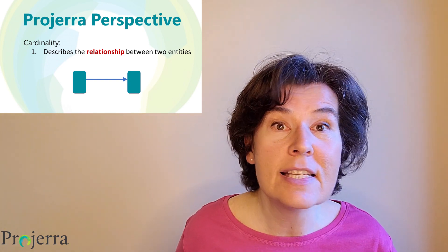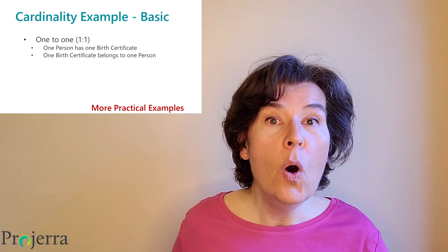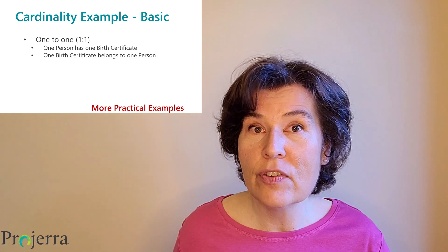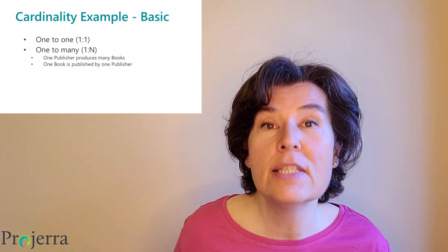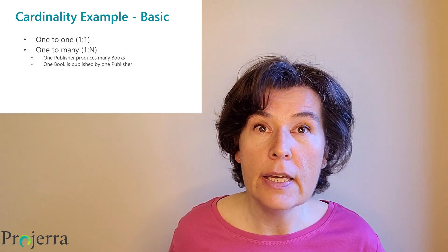There are essentially two types of relationships. The first may be described as one-to-one. For example, one person has one and only one birth certificate. Going the other direction, one birth certificate belongs to one and only one person. The second type of common relationship is described as one-to-many. For example, one publisher may produce many books, or one book is published by only one publisher.